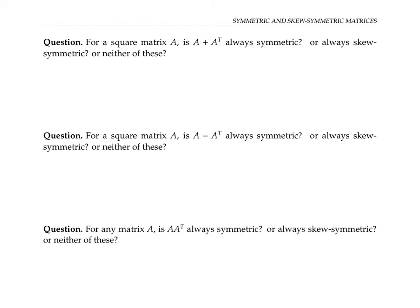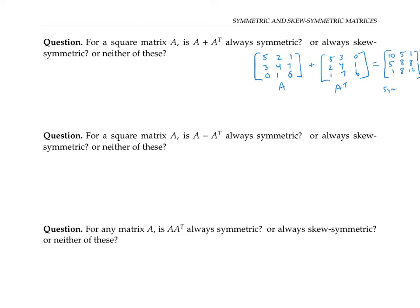We know that symmetric and skew symmetric are related to the idea of transpose. So let's see what happens if we take a matrix and add its transpose, subtract its transpose, or multiply by its transpose. For a square matrix A, is A plus A transpose always symmetric, skew symmetric, or neither? If I look at an example — here's a matrix A and here's its transpose — here's the sum. We get a symmetric matrix for this example.